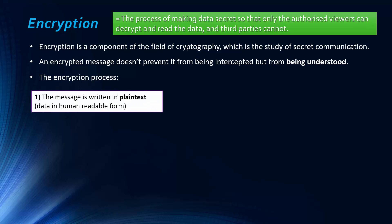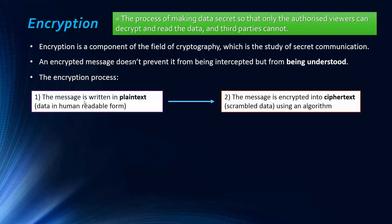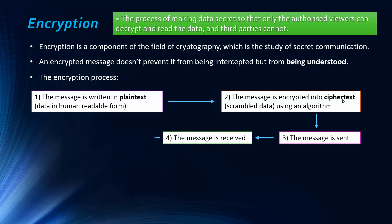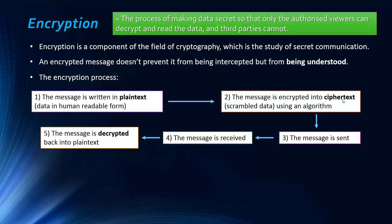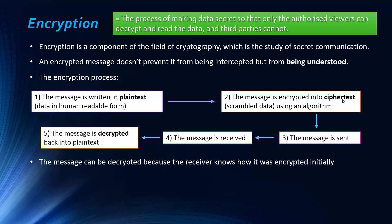So this is the encryption process. The first step is to write your message in plain text — that is, the data in human readable form. Then you encrypt it using an algorithm, scrambling the data into something called ciphertext, which just looks like jumbled data. The message is sent, received, and then the person who receives it can decrypt it back into plain text, because they know how it was encrypted initially.